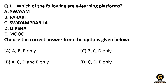SWAYAM and SWAYAM Prabha are the e-learning platforms of the Government of India where you get video lecture courses. DIKSHA is an e-learning platform where you get PDF material from NCERT and all state boards. MOOC stands for Massive Open Online Courses — an international platform where you get e-courses from top universities across the world. Option B, PARAKH, is a Hindi word meaning 'assessment' — it is an assessment platform of AICTE that assesses students on overall development. So the only option that is not an e-learning platform is PARAKH, and our correct answer is A, C, D, E — that is option B.